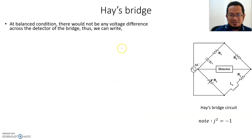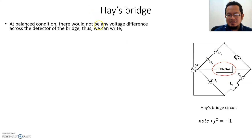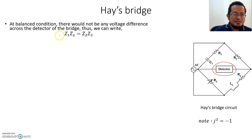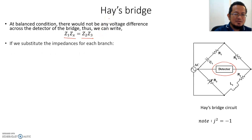At balance condition, let's derive the equation relating the unknown parameters to the known parameters. At balance condition, there will be no voltage difference at the null detector — no current flows. As with any standard AC bridge, the product of the impedance in opposite branches equals the product of the impedance in the other pair of opposite branches.